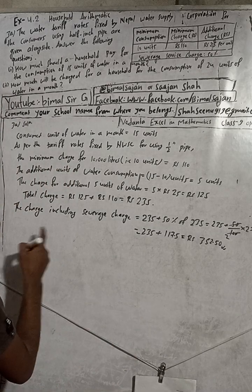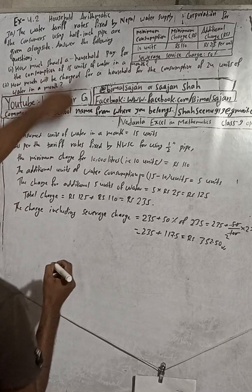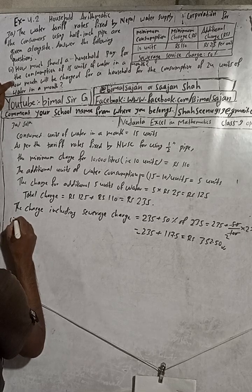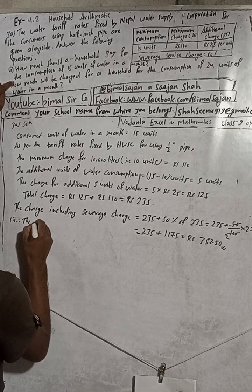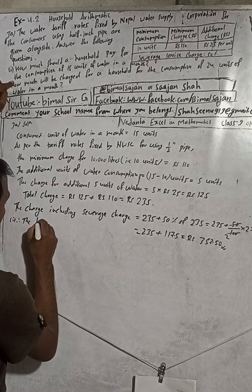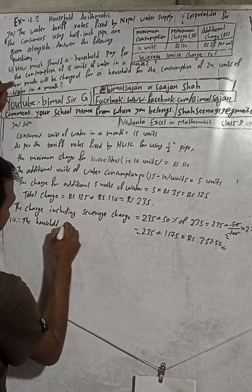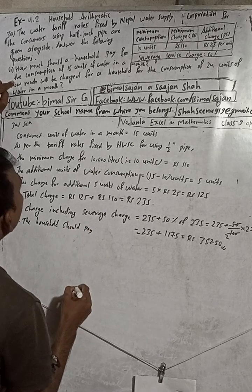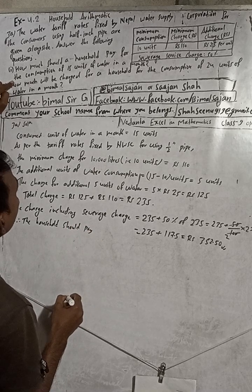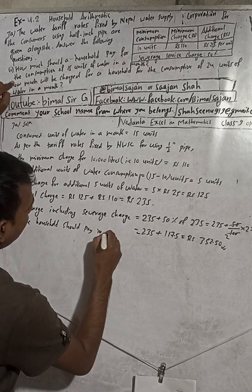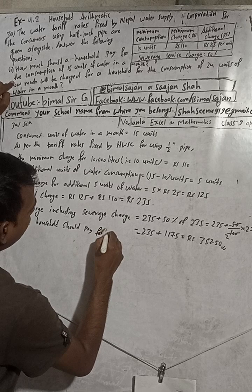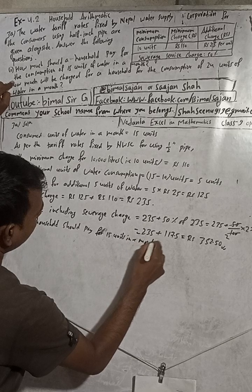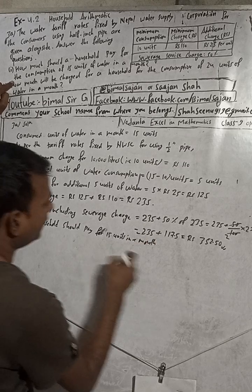Therefore, the household should pay Rs.352.50 for the consumption of 15 units of water in a month.